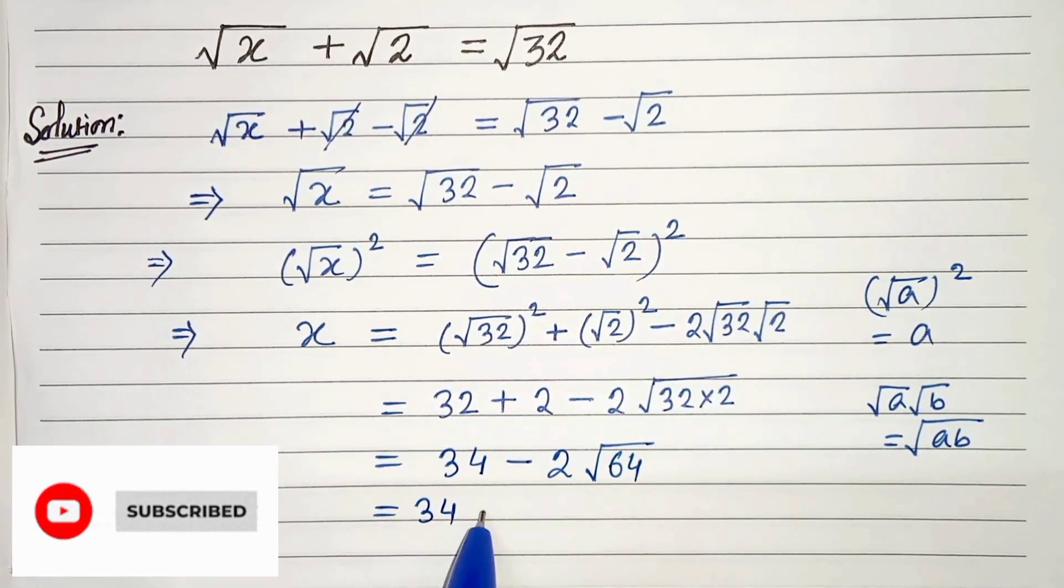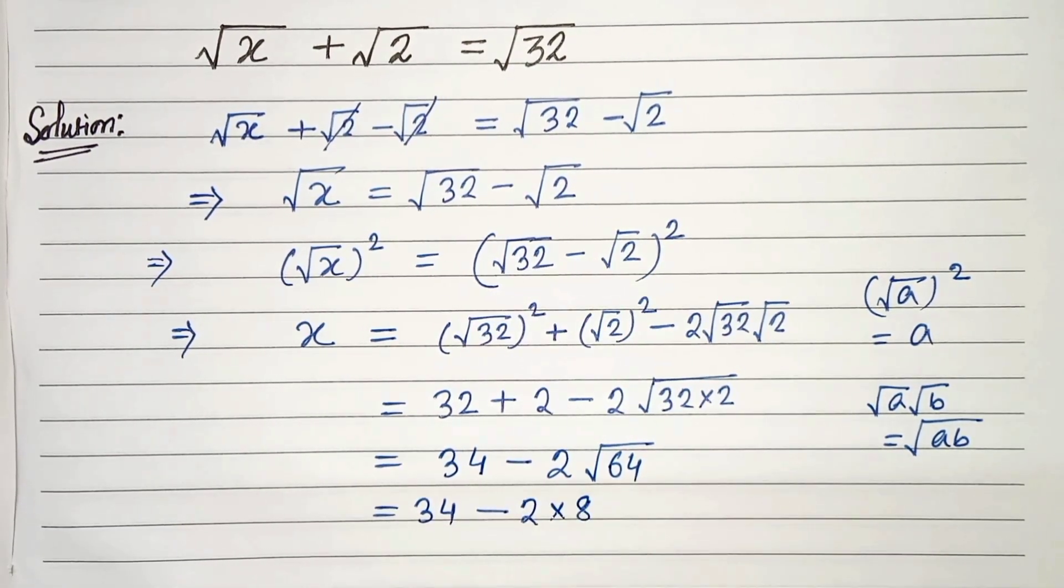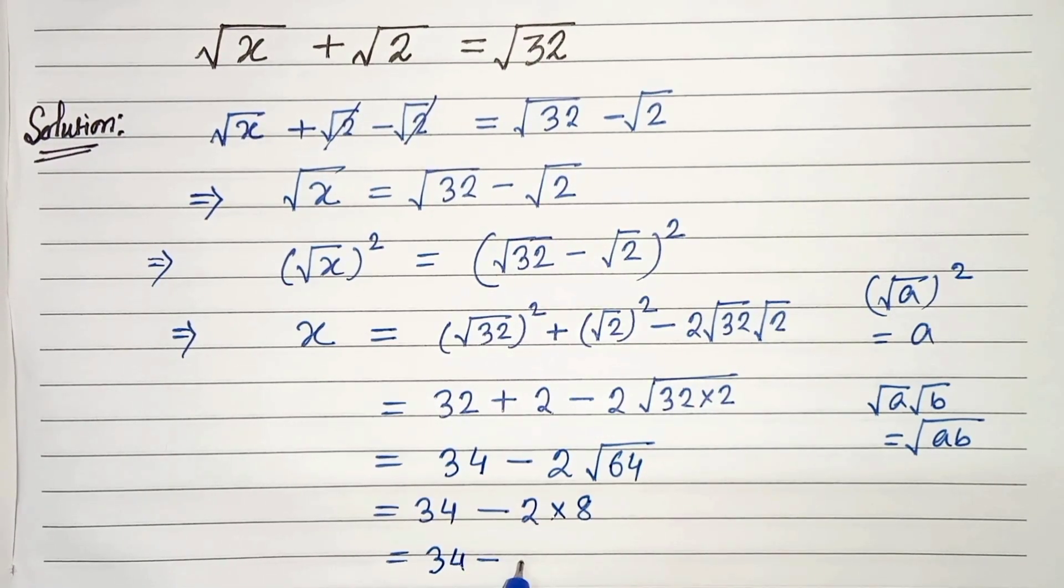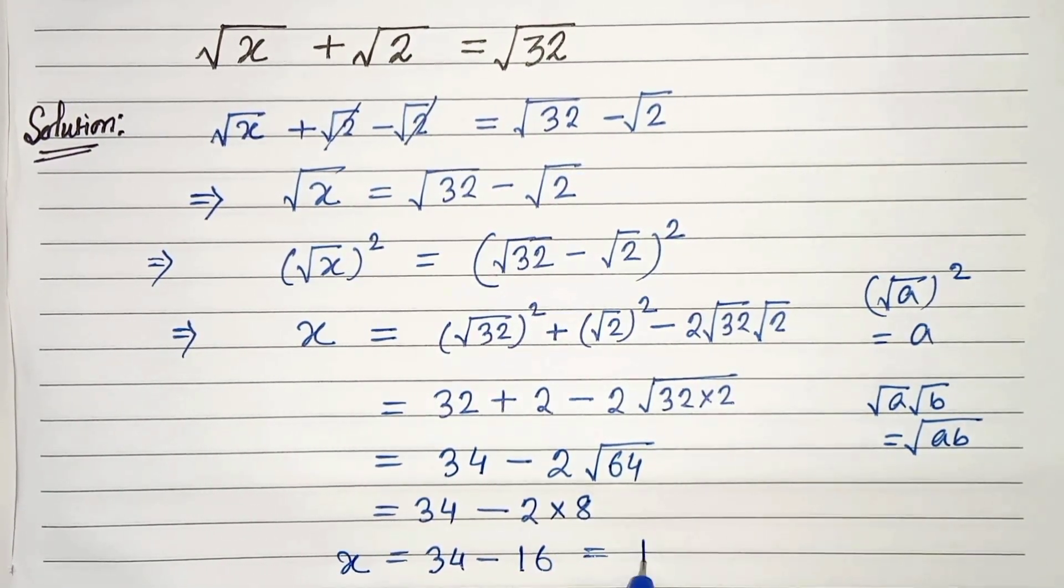In the next step, 34 minus 2√64. √64 is 8, so 34 - 16 which is 18.